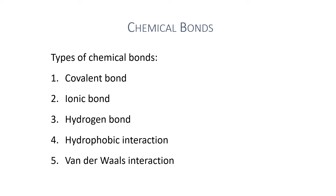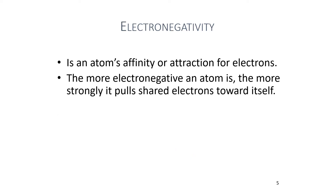The different types of chemical bonds we are going to look at are covalent bond, ionic bond, hydrogen bond, hydrophobic interactions, and Van der Waals interaction. Electronegativity is an atom's affinity or attraction for electrons. The more electronegative an atom is, the more strongly it pulls shared electrons towards it.